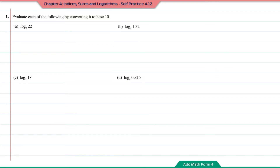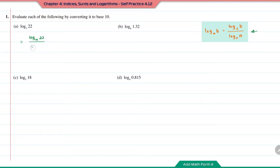To convert the base of the log from one to another, always refer to this rule. Question A: log base 3 of 22. This will be log base 10 of 22 divided by log base 10 of 3. Solve this using a calculator and you'll get the answer of 2.8136.